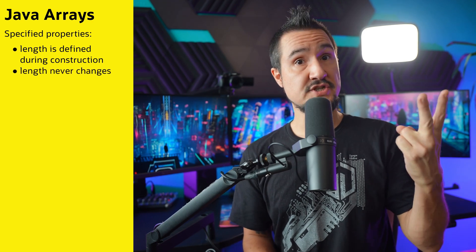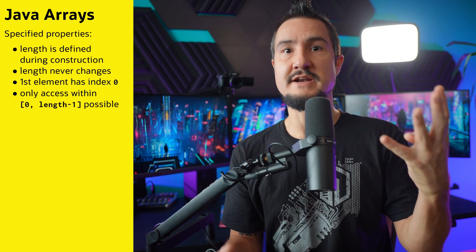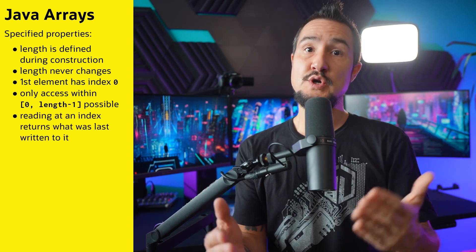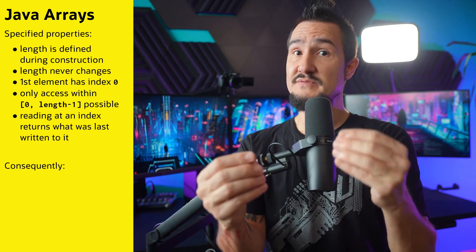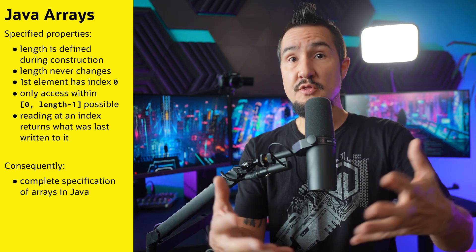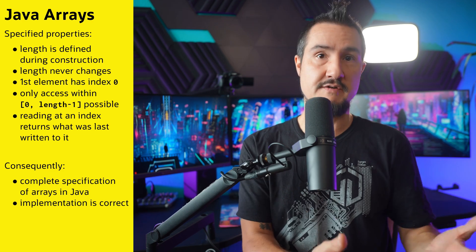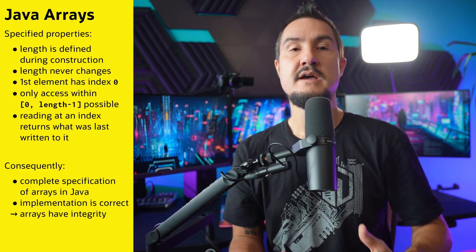Take Java's arrays as an example. Java's specification has quite a few things to say about arrays: their length is defined during construction, their length never changes, the first element has index zero, only access within the bounds from zero to length minus one will succeed, and reading at an index will return the element that was last written to it, ignoring concurrency. When put together, the specifications of all of these features completely specify arrays as a feature. And because all the implementations are correct, so is the implementation of arrays as a feature. So the integrity of these features allows us to say that arrays in Java have integrity. This mechanism applies just the same to other constructs in the Java platform, as well as the programs we build on it.